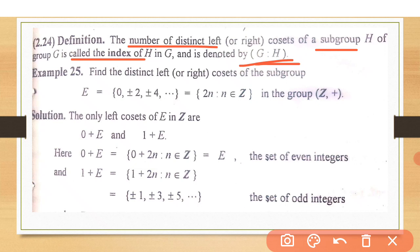So let us see an example. Find the distinct left cosets and right cosets of subgroups. We have a group Z, the integers with respect to addition: Z equals 0, plus minus 1, plus minus 2, plus minus 3, and so on. This is the group Z. And we take its subgroup E, all the even elements: 0, plus minus 2, plus minus 4, and so on.